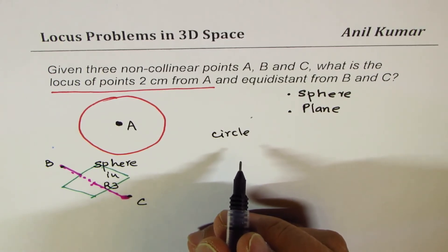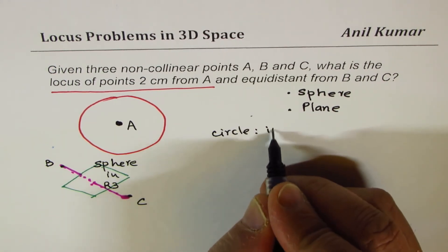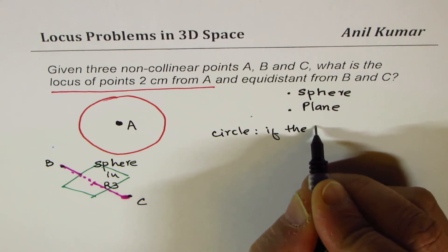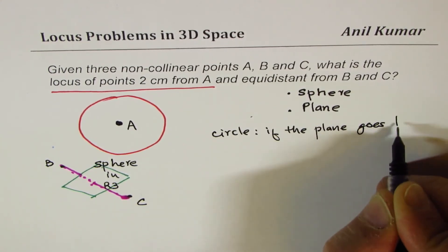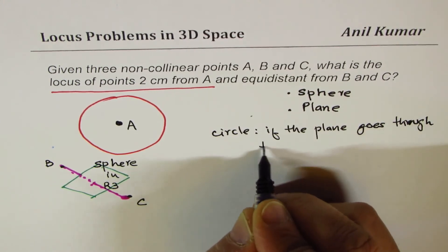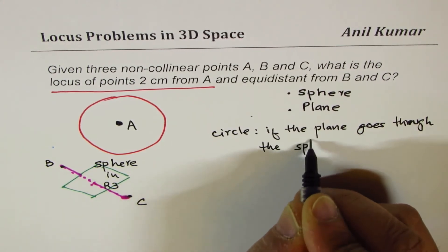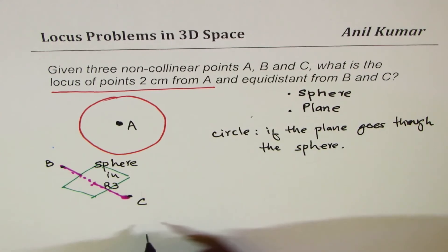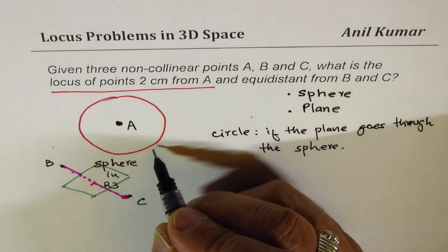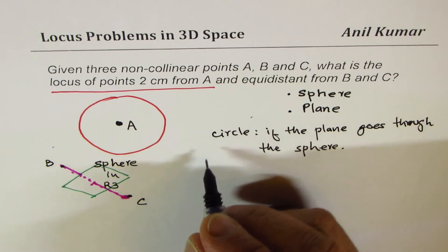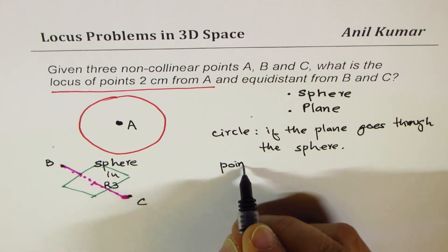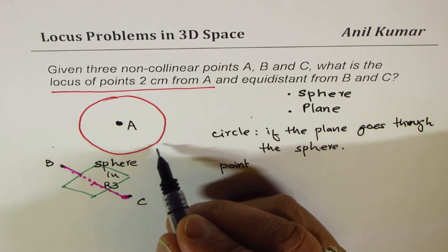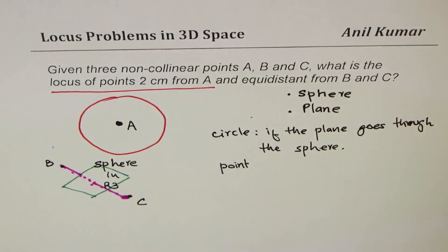If they intersect, the plane could be at tangent also, right? So, if the plane goes through the sphere, correct? Now, it could be a point. It could be tangent to a circle. So, it could be a point. I should say, actually, when it be a tangent, think like this,